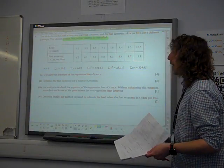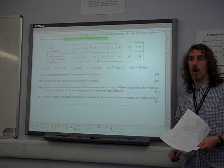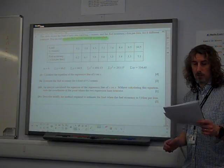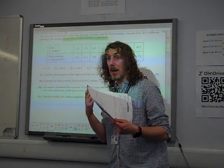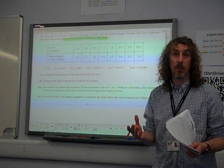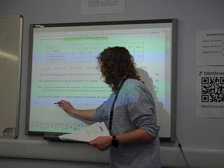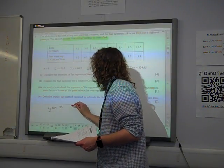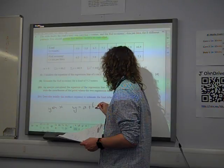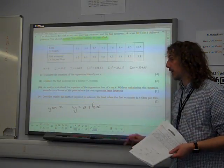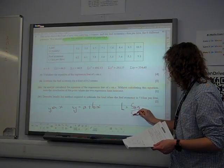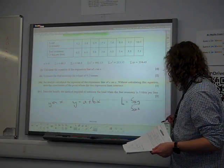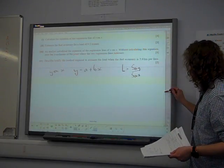Part one, calculate the equation of the regression line of y on x. Right then, for our y on x regression line, this is the easy way of asking the question. This is the one that's in the formula booklet. y on x is the one that looks like that, y equals a plus bx, where b is Sxy divided by Sxx. So we need to work out what b is.